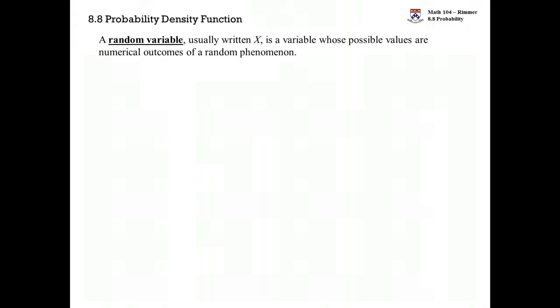This is the concept video for probability. The idea is based off of having a variable that can take on outcomes from some random phenomenon. We'll call that variable X, usually a capital letter, but for the most part I'll be using lowercase letters to stand for the variable. That variable gets the name called a random variable.